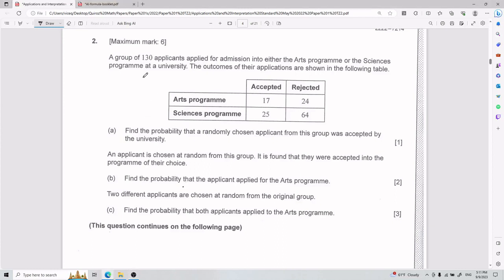All right, for this next one, we have that a group of 130 applicants applied for admission into either the arts program or the sciences program at a university. The outcomes of their applications are shown in the following table. So just so that we understand what's going on here, to read the table: those that got accepted into an arts program are 17, those that got rejected to a sciences program are 64. That is how you read the table.